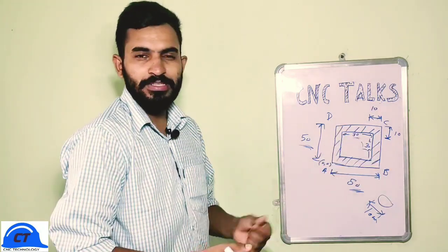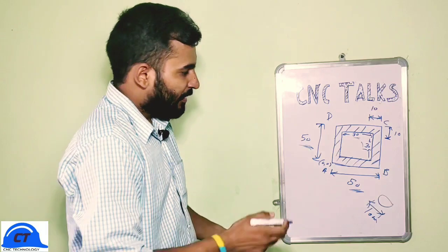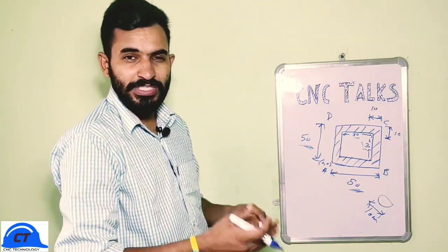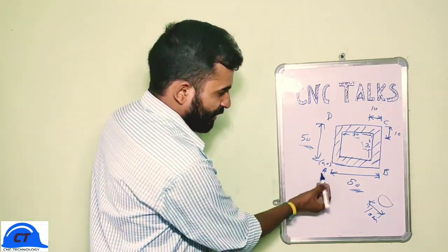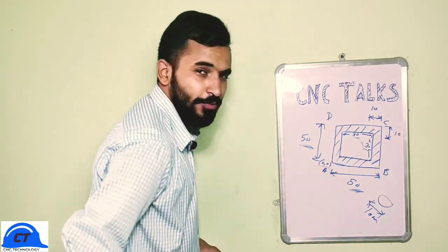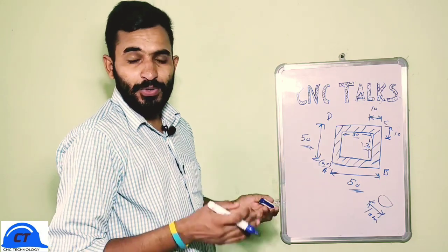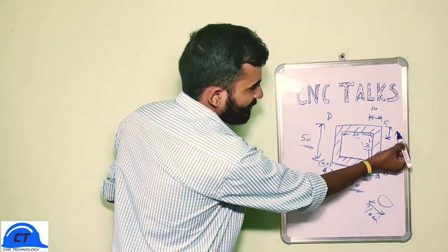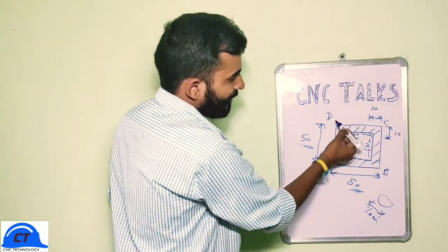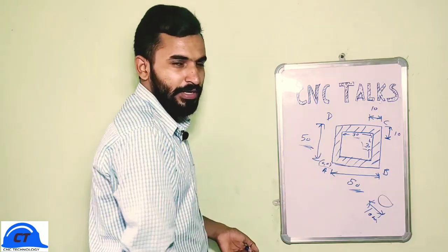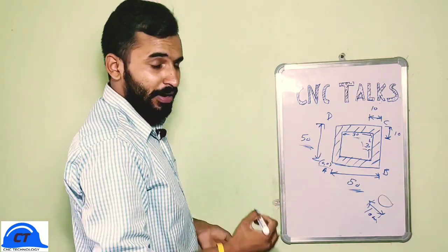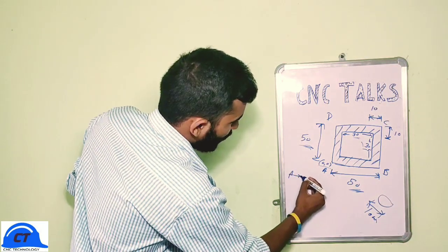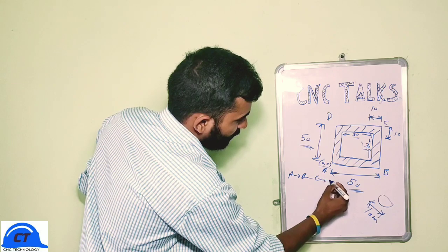Let's suppose this is our point A, which is our origin point at 0,0. Our tool path is from A to B, B to C, C to D, and D to A. So the tool path will be A to B to C to D.